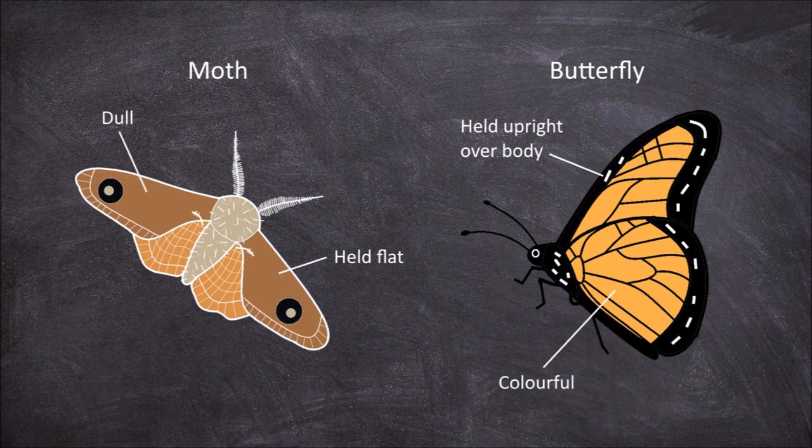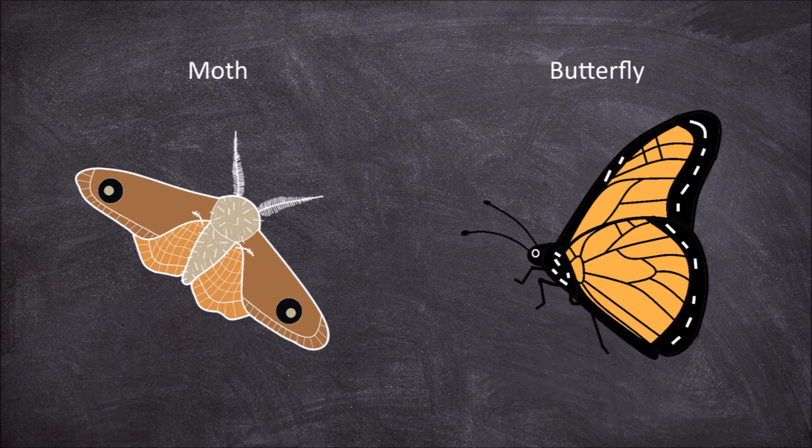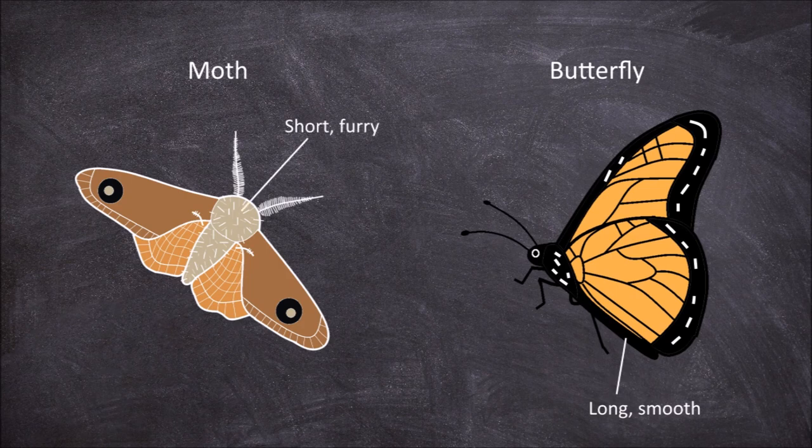The final difference between moths and butterflies is in relation to the bodies of each group. The bodies of butterflies are usually smooth and longer than those of moths, whereas the bodies of moths are usually furry looking and shorter.